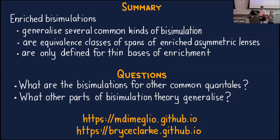Question from the audience: Given a category C, we can define a category of relations by taking terminal spans and taking sub-objects of that. Would that lead to bisimulations in general, or would it be different?